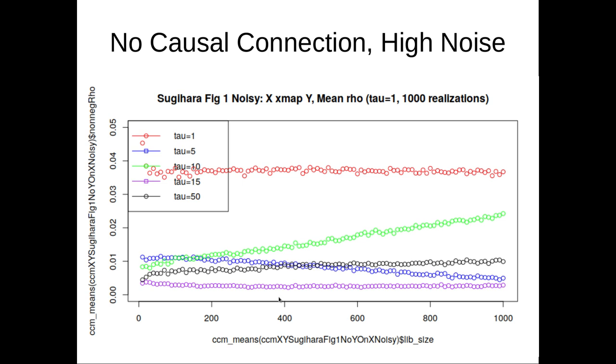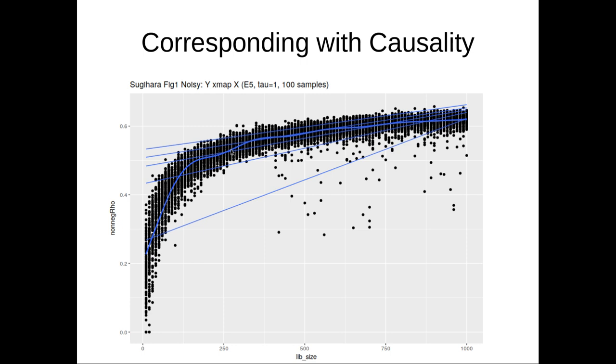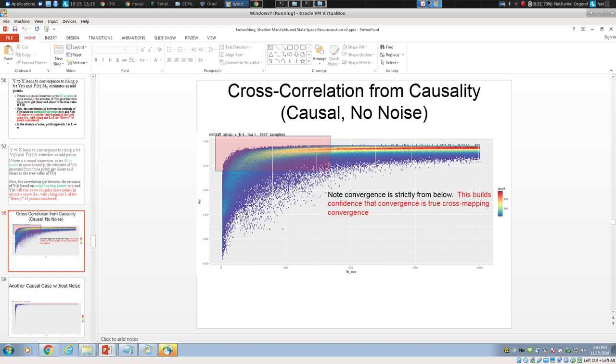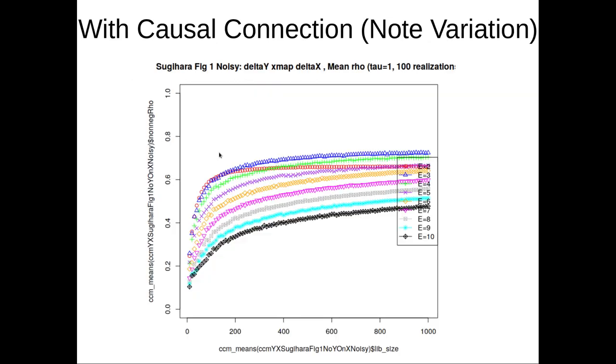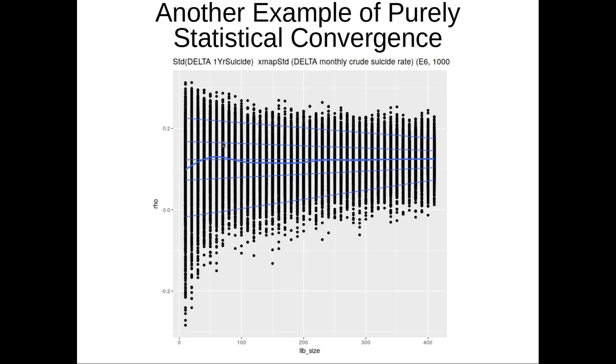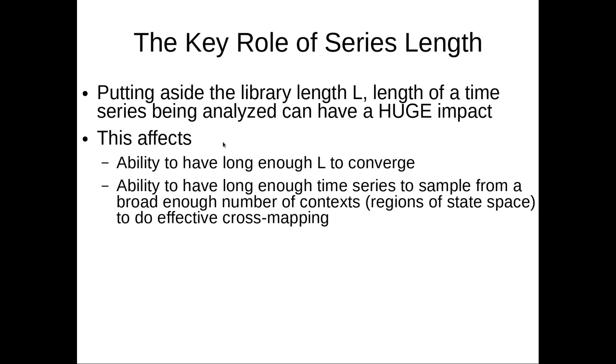In terms of distinguishing true cross mapping from statistical convergence, I commented on this previously. It's much better to deal with the sort of density plots that I showed previously, as compared to plots like this. This is an indication of no causality. You can see it because of the fringe here.